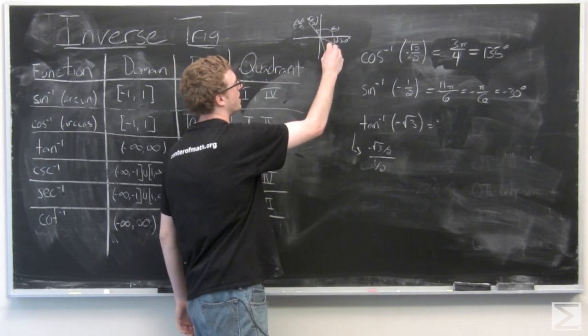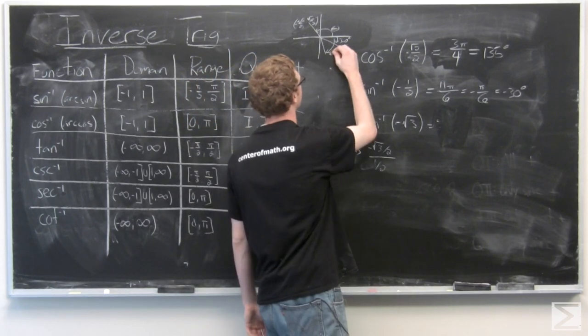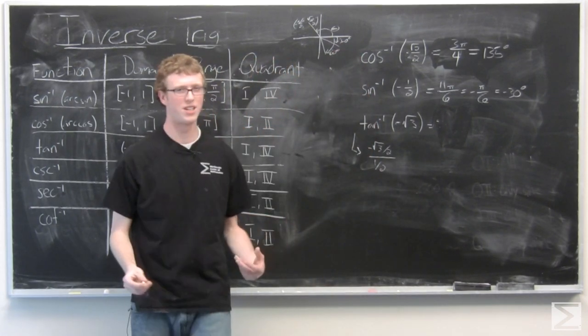Or that angle right there. We can drop this all the way down. That's a 60 degree angle. So it is going to be negative 60.